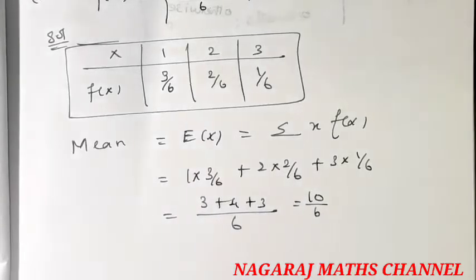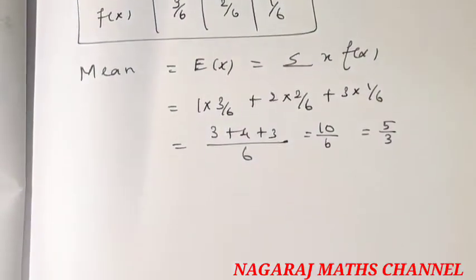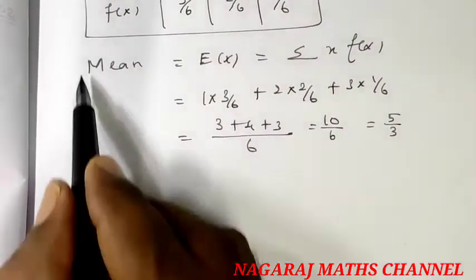So, 10 divided by 6. This is 5 divided by 3. This is 5 divided by 3. This is the mean.